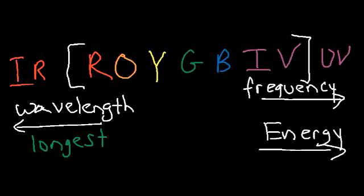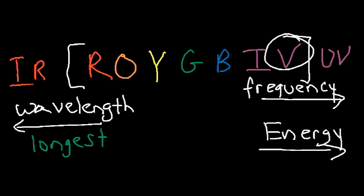Which one has a lower frequency — yellow or indigo? Since frequency increases to the right, the one on the left has the lower frequency, and that's yellow. Which one has less energy — orange or violet? Energy increases to the right, so the one with less energy is on the left, which is orange. Which one has a shorter wavelength — blue or violet? Wavelength increases to the left, so the shorter wavelength is on the right side — violet has a shorter wavelength than blue.